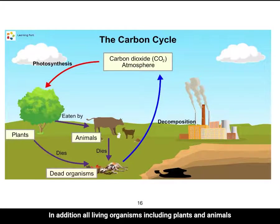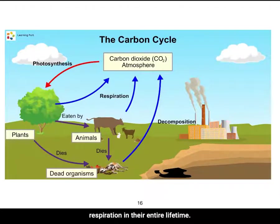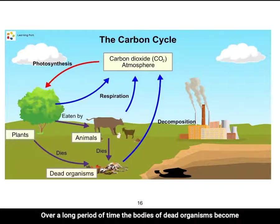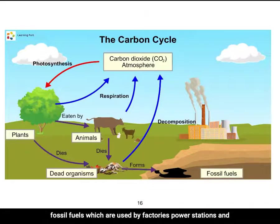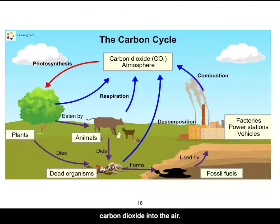When plants and animals die, their dead bodies decompose and release carbon dioxide back into the air due to the actions of fungi and bacteria in the soil. All living organisms, including plants and animals, release carbon dioxide through the process of respiration. Over a long period of time, the bodies of dead organisms become fossil fuels used by factories, power stations, and vehicles. The combustion or burning of fossil fuels also releases carbon dioxide into the air.